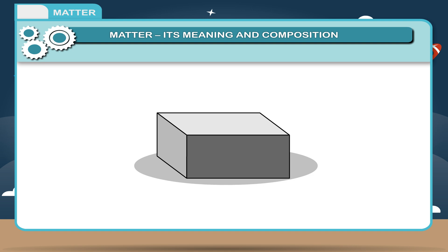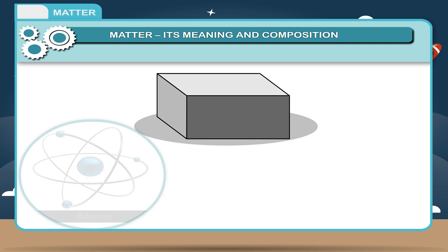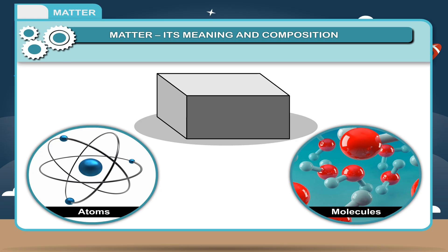Matter is made up of tiny particles called atoms and molecules that cannot be seen by the human eyes as they are tiny and small.